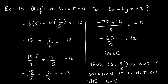Negative 63/5 is not negative 12, so this is a false statement. That means when we plugged in 5 and 3/5 we did not get negative 12 equals negative 12. Since we got a false statement, this point is not a solution, and it is not on the graph of this line.